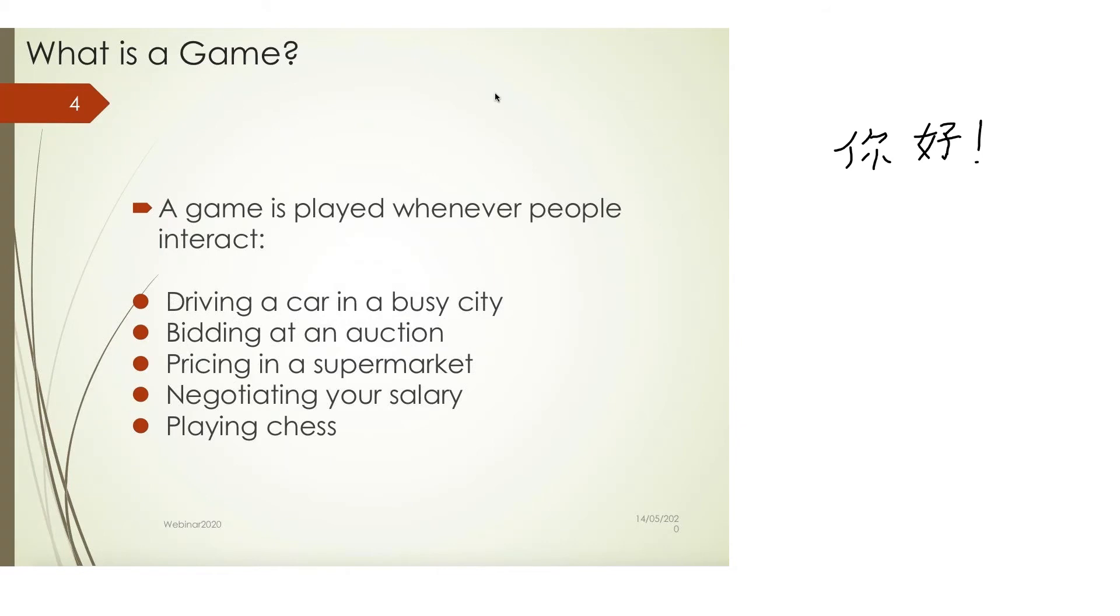So the returns to an action that you take do not only depend on what you do, but also depend on what other players do. So there is a fundamental interdependence in what you get. And hence, considering what opponents do is very important.